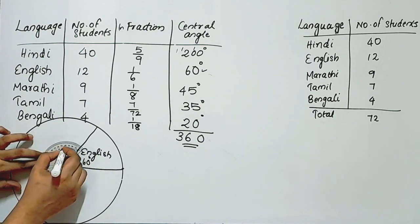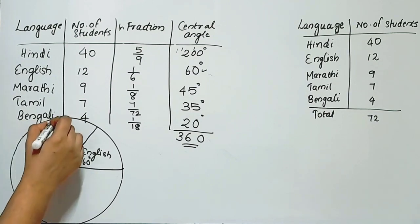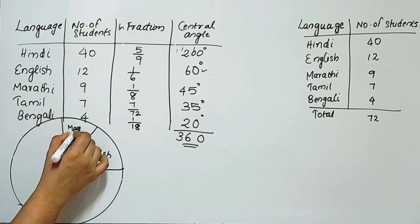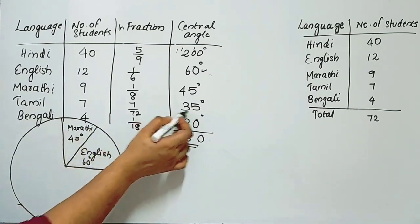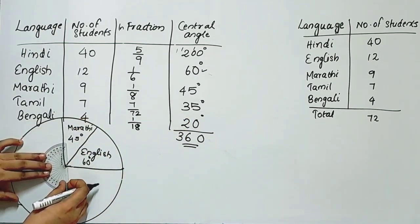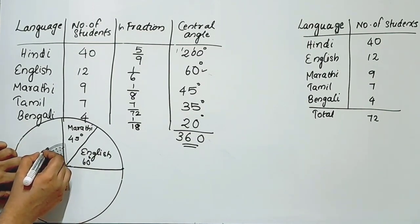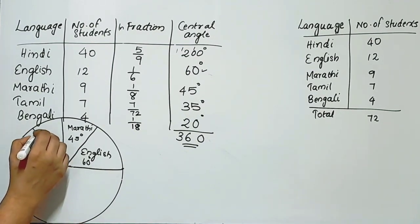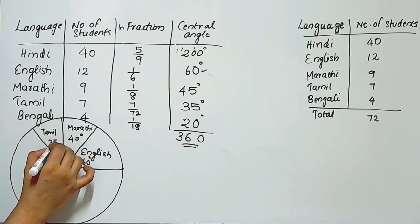Next, we mark Marathi at 45 degrees. Using the protractor, we find 45 degrees and mark it. Then we mark Tamil at 35 degrees using the protractor and draw the line from the center.